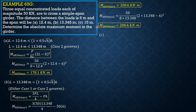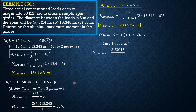For Part C, L = 15 m, which is greater than 13.348 m, so Case 1 controls. M_abs = 3PL/4 minus PH = 3×50×15/4 minus 50×6 = 562.5/4 minus 300 = 262.5 kN·m.